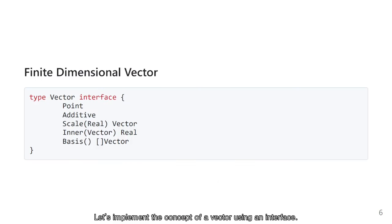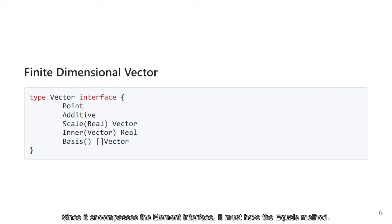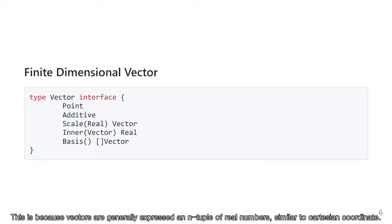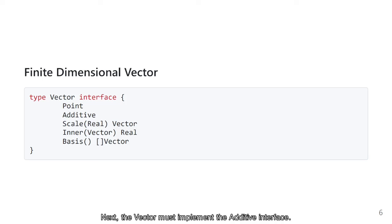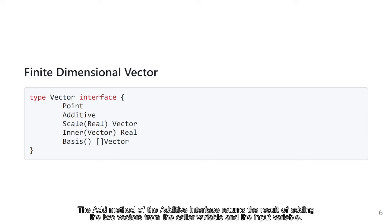Let's implement the concept of a vector using an interface. First, a vector is a point interface. Since it encompasses the element interface, it must have the equals method. This is because vectors are generally expressed as n-tuples of real numbers, similar to Cartesian coordinates. Next, a vector must implement the additive interface. This allows vector addition. The add method of the additive interface returns the result of adding two vectors from the caller variable and the input variable.